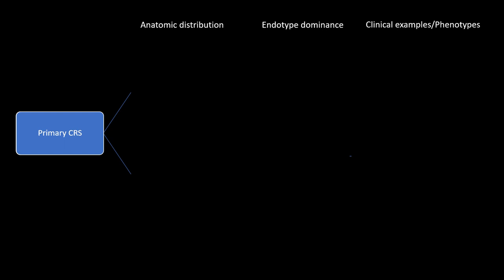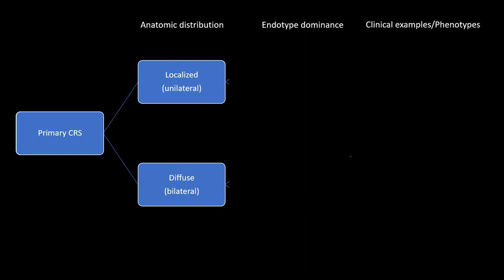What we see most of as ENT surgeons is patients who really have inflammation in their respiratory system that's not a result of some other factors going on either locally or in the body. This is what we call primary CRS, and the first step is to determine the anatomical distribution.